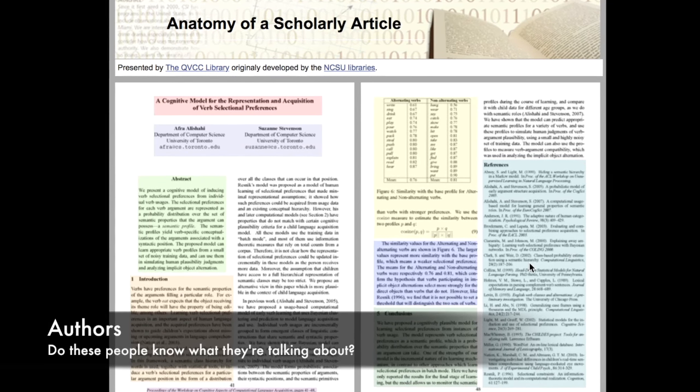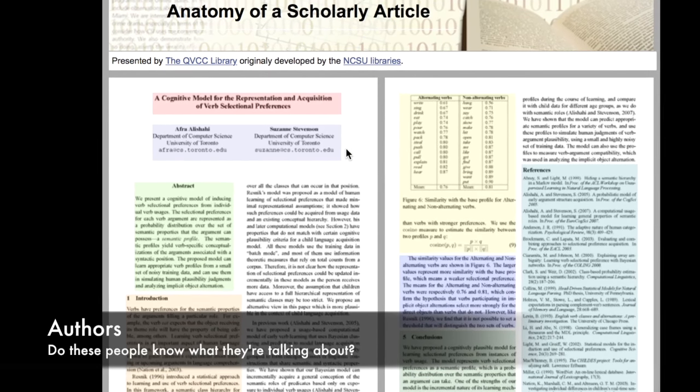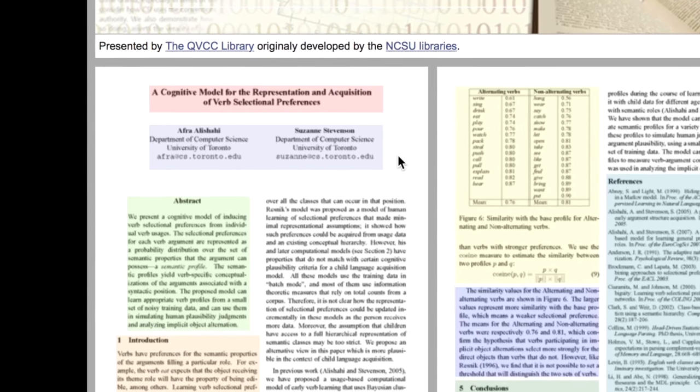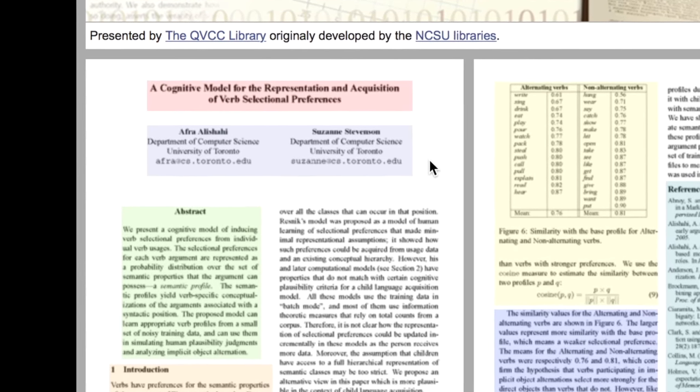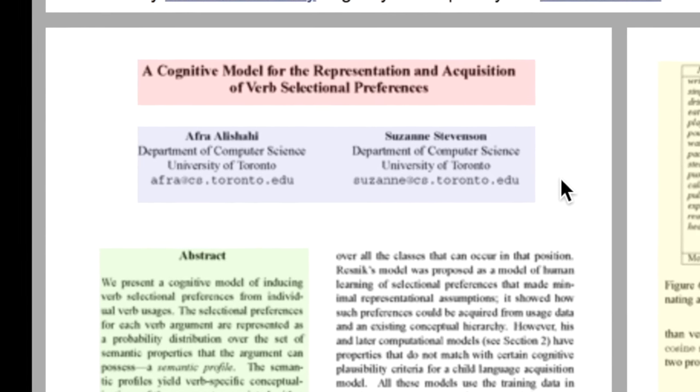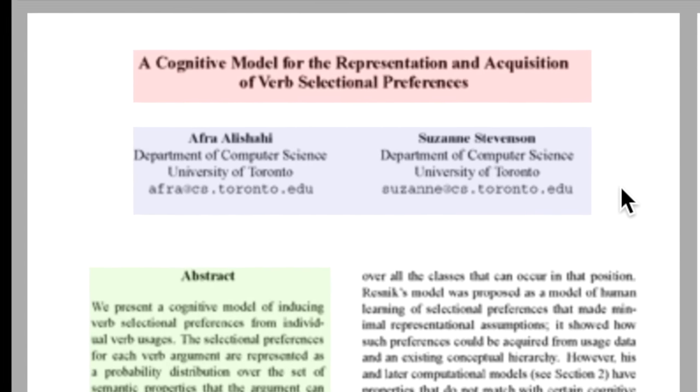If the article still seems promising, notice information about the authors, usually found here, right after the article title. Look at their academic credentials and affiliations. Does their scholarship or expertise match the subject matter of the article? Is their expertise relevant to your research question?